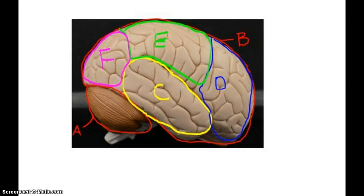In this video, we're going to review the parts of the brain. We're going to start with the larger structures, the lobes, and then work our way down to the smaller structures.